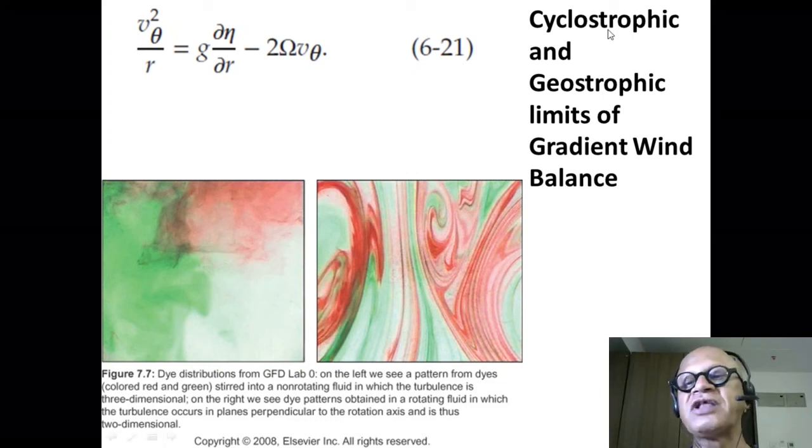So you get a cyclostrophic balance. So gradient wind balance is basically where you have pressure gradient and you have inertial terms and rotational effects. Cyclostrophic flow is one limit where the radial pressure gradient is just balanced by the centrifugal force and the geostrophic limit is where the rotational effect is balancing the pressure gradient force. So these are the kind of two limits of the gradient wind balance. So these are the three terms.